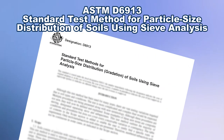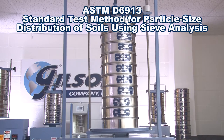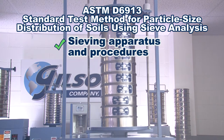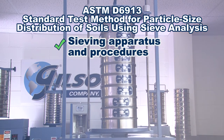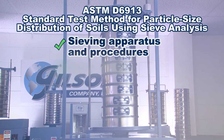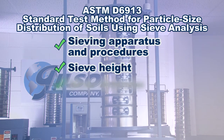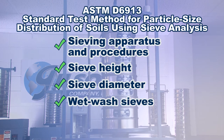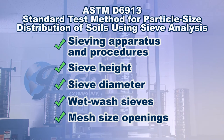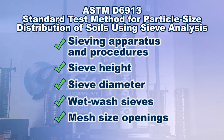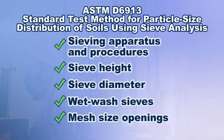The standard test method for particle size distribution of soils using sieve analysis, ASTM D6913, goes into greater detail in particle determination of soils because of soils' vast variations such as soil type and soil condition. As well as covering sieve apparatus, sampling procedures, and other considerations, D6913 offers guidance on selecting sieves including specifics on sieve height, standard and large diameter sieves, wet wash sieves, and identifies specific sieve sizes required to determine the gradation of soils between 75 millimeters and 75 microns.